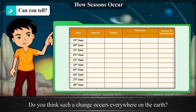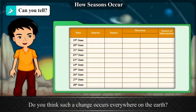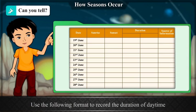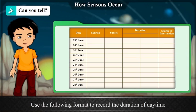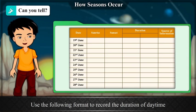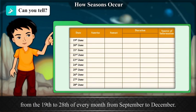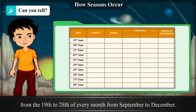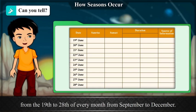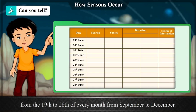Do you think such a change occurs everywhere on the earth? Use the following format to record the duration of daytime from the 19th to the 28th of every month from September to December.